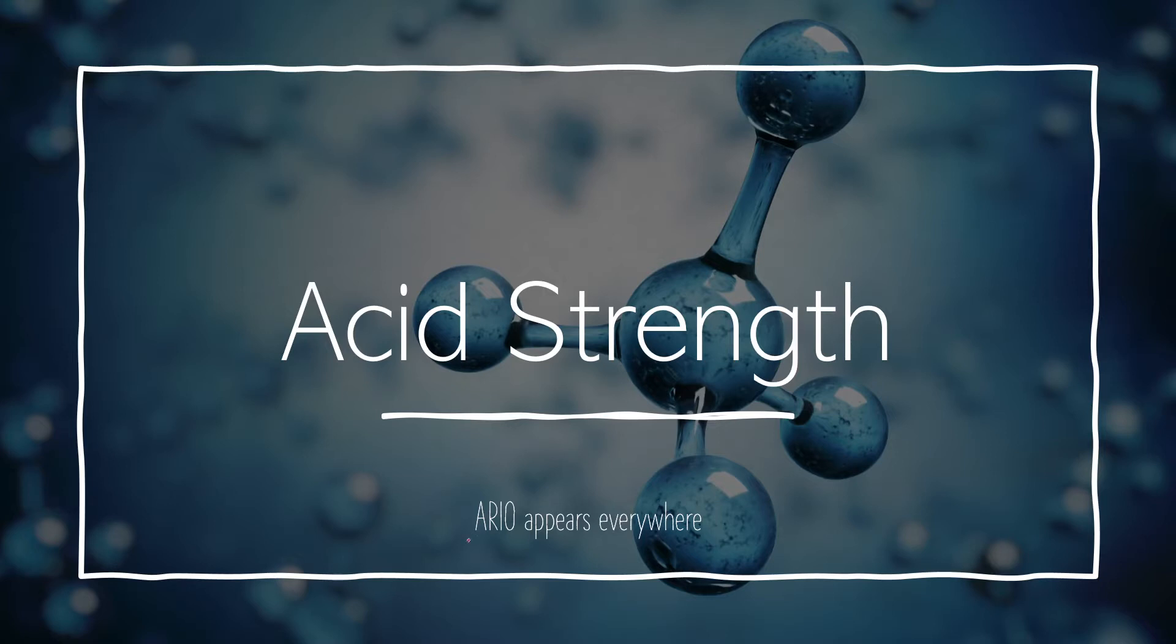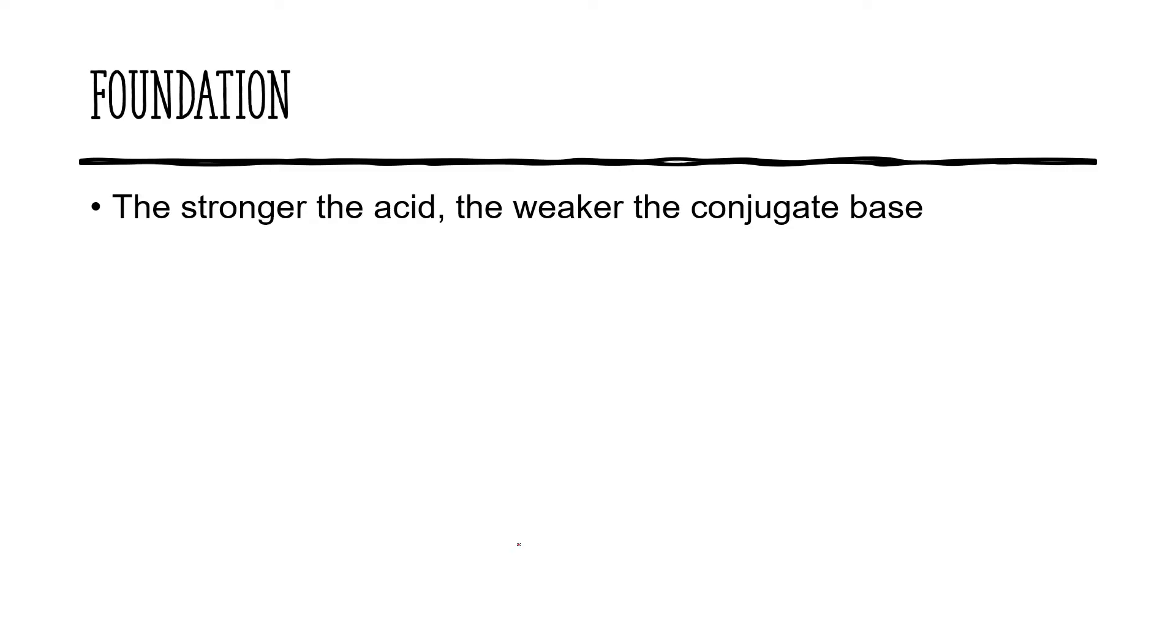The abbreviation that we're going to use to help remember these factors is ARIO. And ARIO is going to appear everywhere. It's in acid and base but it also appears in organic chemistry questions. Let's get cracking.